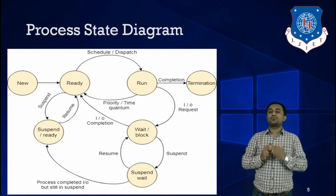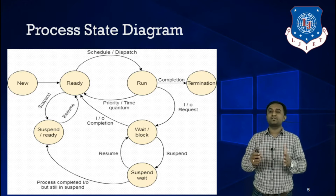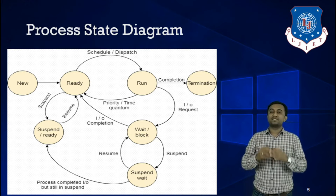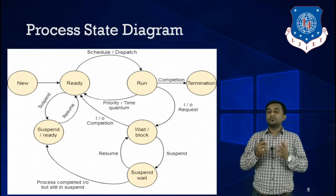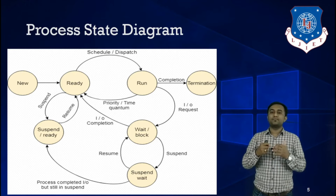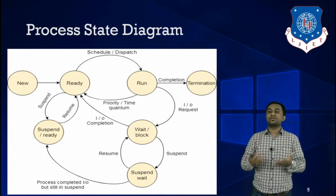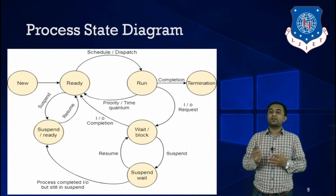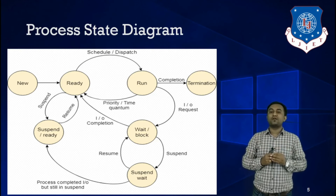Once a process is placed into the Running state, it starts its execution in the CPU. Once it completes execution, it goes to the Terminated state, where its Process Control Block is destroyed. If everything happens smoothly, a minimum of four states are required for process execution: New, Ready, Running, and Terminated.